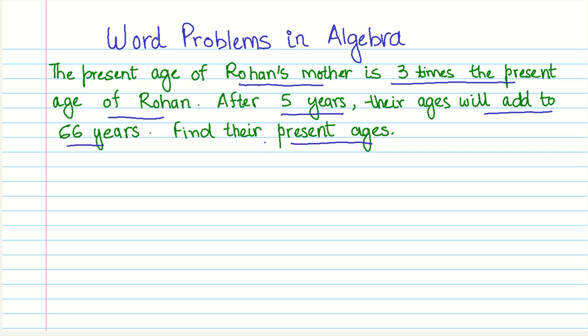Well, what we should do is we should look at whether any relationship between the two unknowns is given in the statement. So in this case, we already have a relationship. Rohan's mother's age is three times the present age of Rohan. So we can easily use a single variable to represent the unknown.